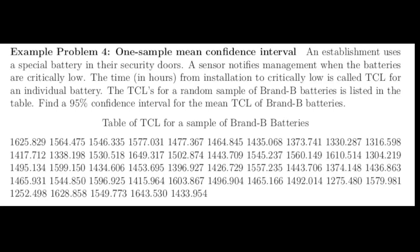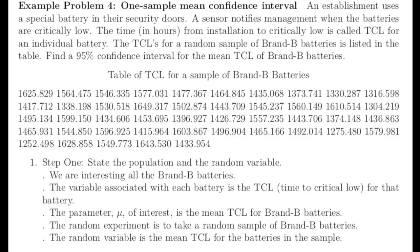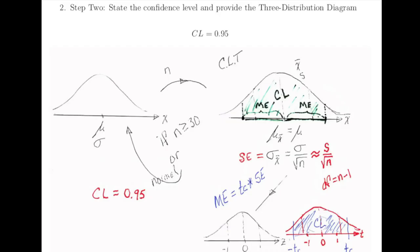Let's put it all together in a written report. Be sure to restate the problem and the given data. Step one, get acquainted with the problem. Say what the population is, what the random variable is. In step two, we're identifying what we're needing to accomplish. We're trying to build a confidence interval at a confidence level of 95%, and we're showing how we're going to do that with the three distribution diagram. It's going to be our map for writing an R script.